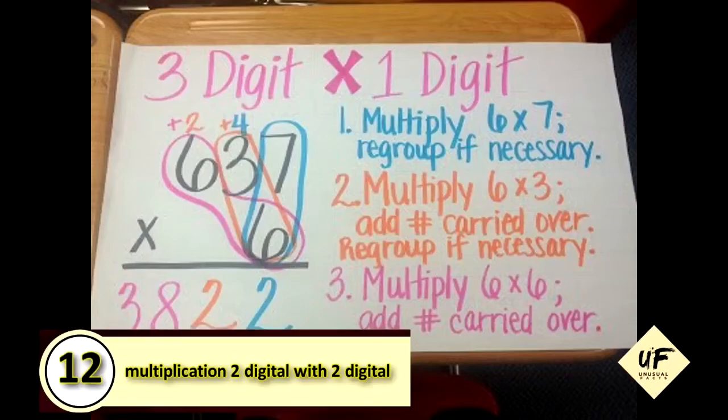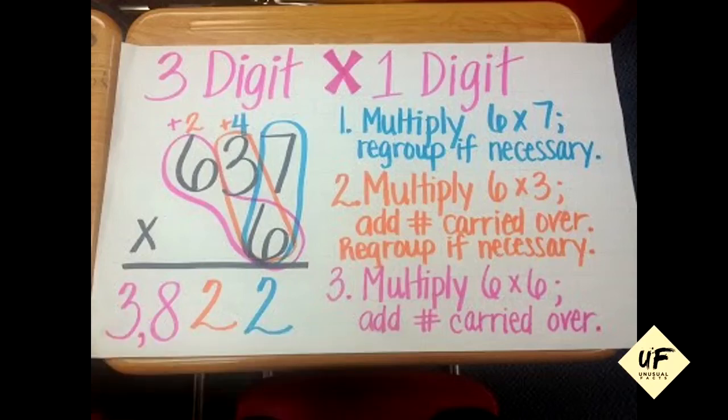Now we're getting tricky with number 13: multiplication, three-digit with one-digit. Let's see if you can follow along. Step one: multiply six times seven, and then regroup if necessary. Six times seven is 42. You put the two below the six and the four above the three to regroup.